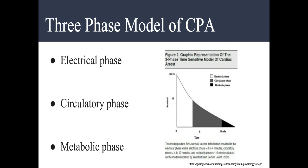The second phase covers minutes four through ten after arrest. This is where energy depletion and reversible cellular damage occur. During this phase, oxygen delivery is most important. Therefore, regardless of whether a patient has a shockable rhythm or not, a cycle of chest compressions is important to deliver oxygen to the tissues. The third and final phase is the metabolic phase, lasting beyond ten minutes, when ischemic injury occurs requiring advanced strategies to recover cellular function.